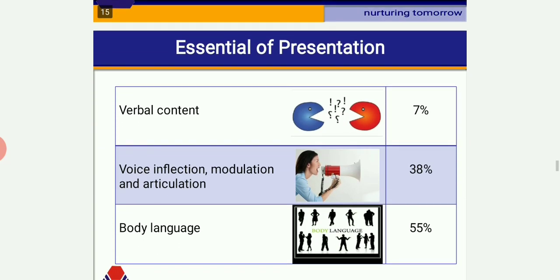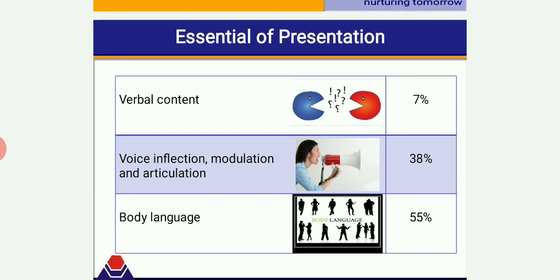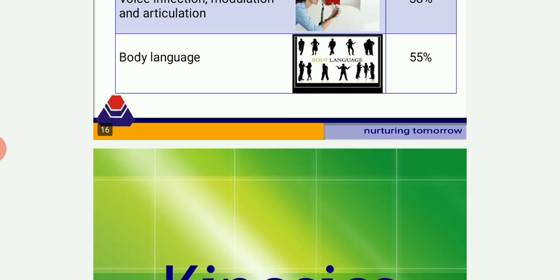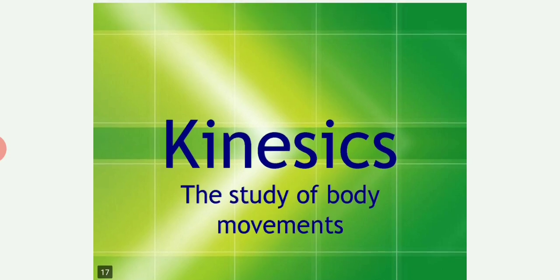Presentations contain three important components: verbal content, voice inflection/modulation/articulation, and body language. Verbal content accounts for 7%, voice inflection, modulation, and articulation — the paralinguistic parts — account for 38%, and body language is the most important component at 55%. Since presentation is a face-to-face activity, body language plays a very important part and is also known as kinesics — the study of the body's physical movements.